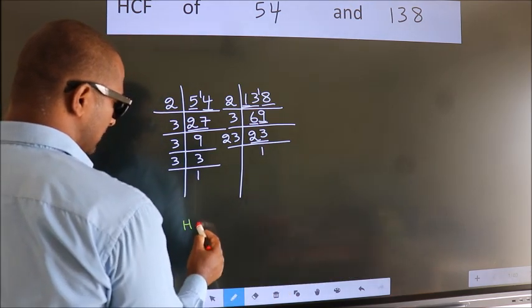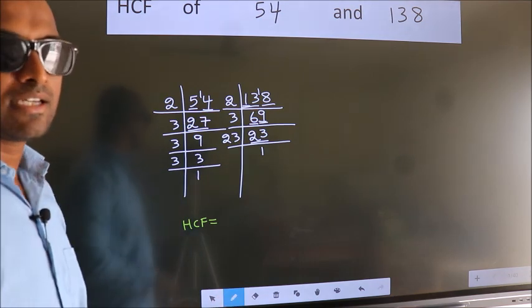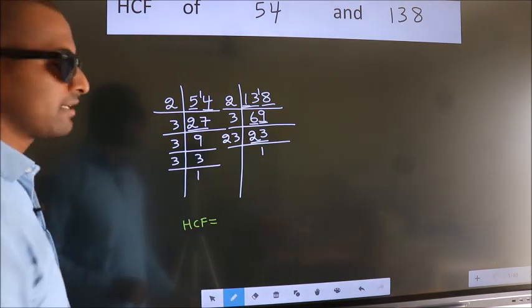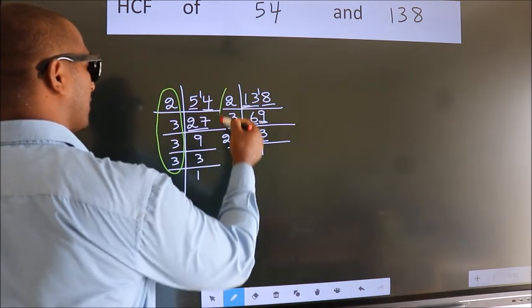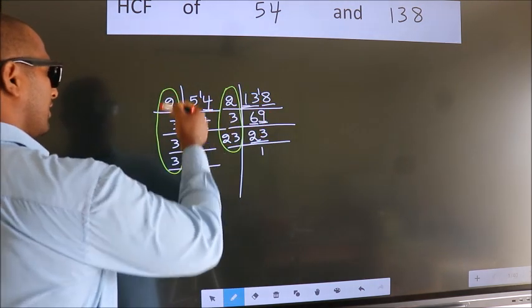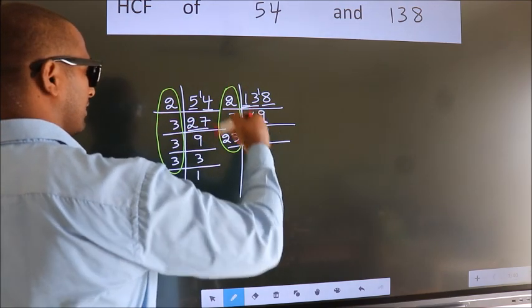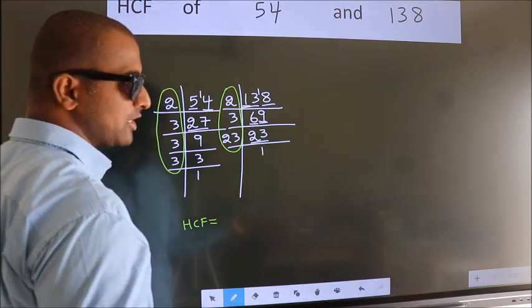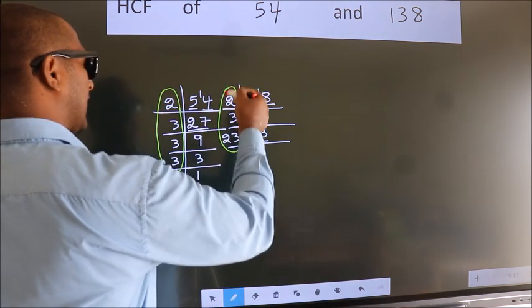Therefore our HCF is the product of the numbers which should be present over here and also here. Here and here.